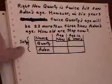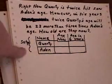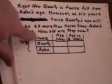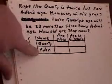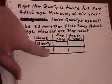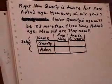The best way to set this up is with a table as I've got now. So I've got a column: name, Corti and Aiden, age now, and age in six years.